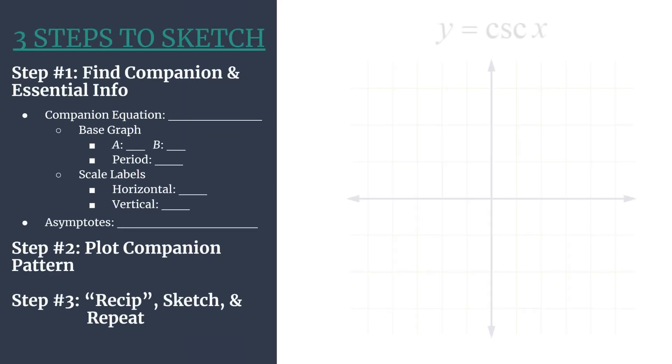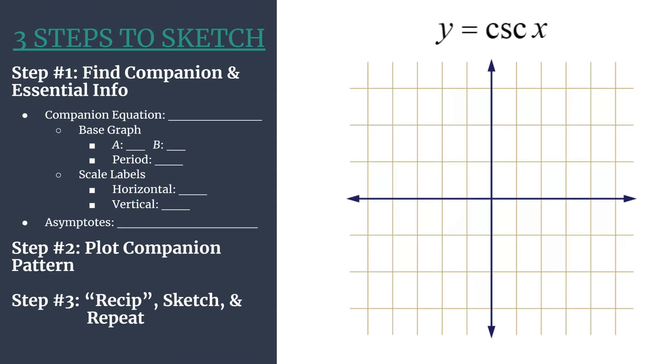Here's our template and here's a grid for our equation. Notice first that our equation is in the general form for an unshifted cosecant equation, y equals a cosecant bx. That's why we know we can use this basic cosecant graphs method. Let's jump in.